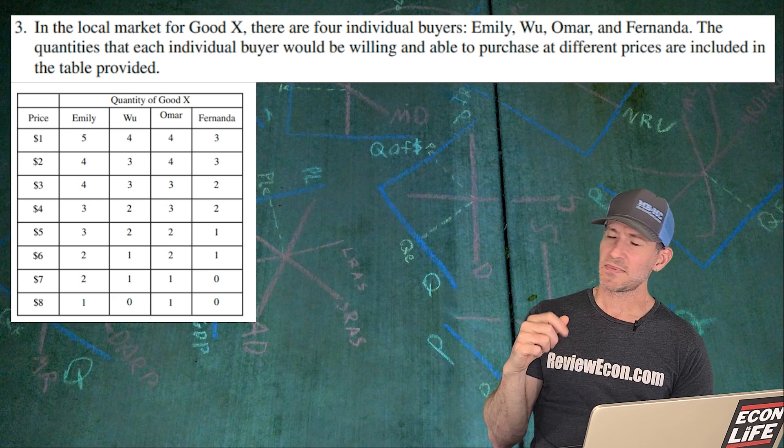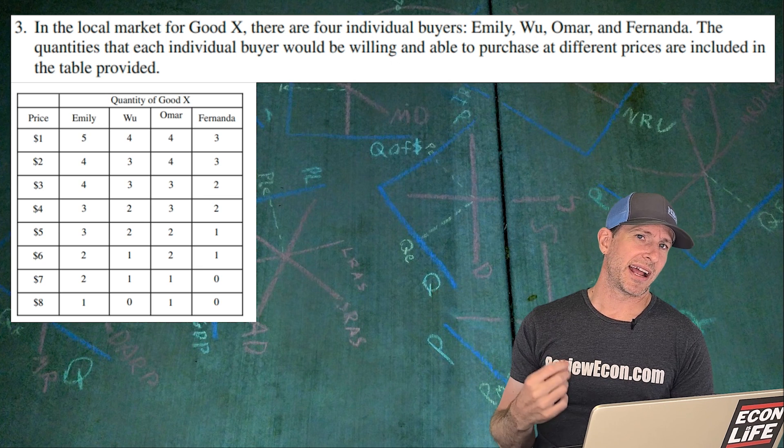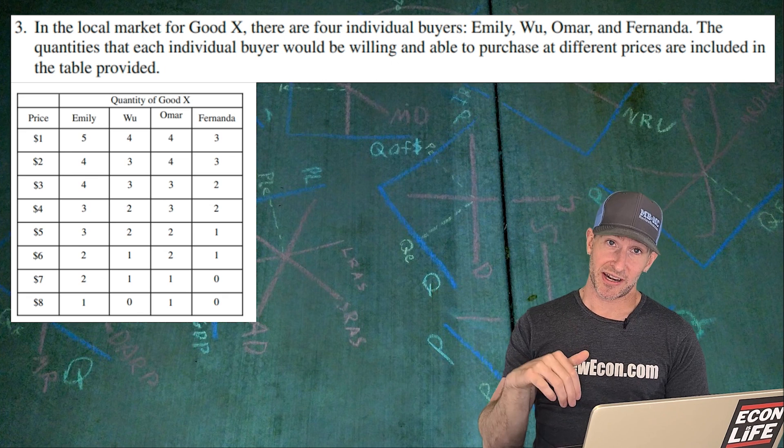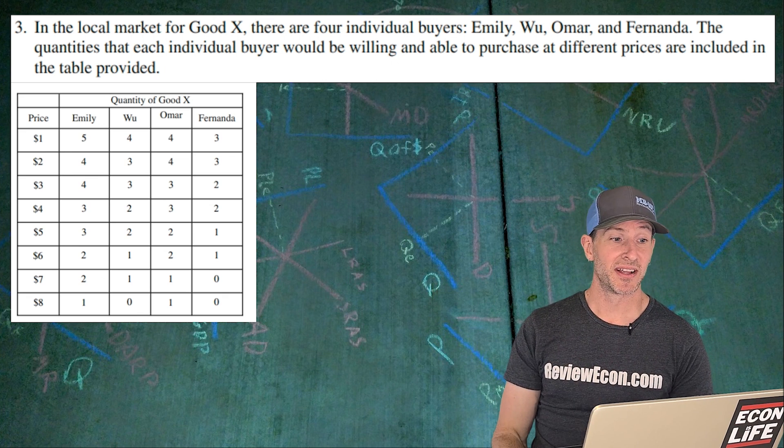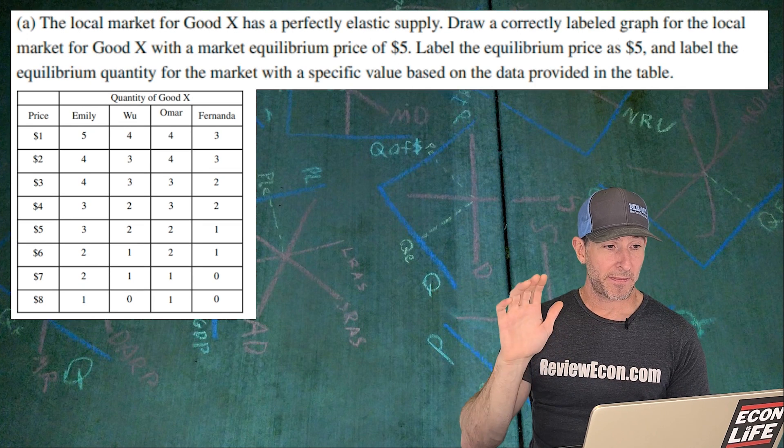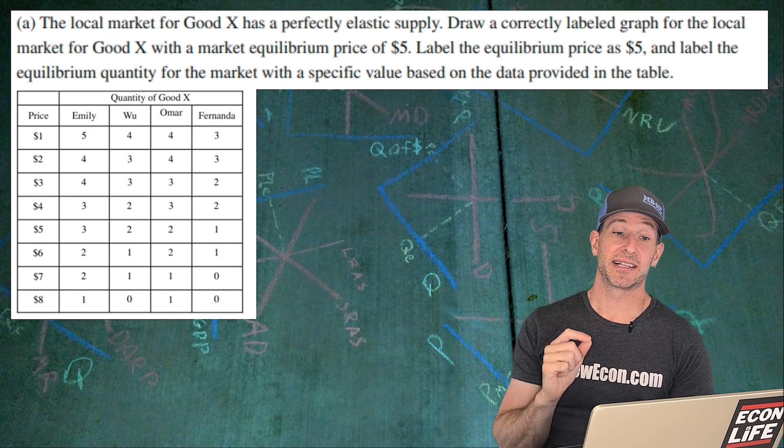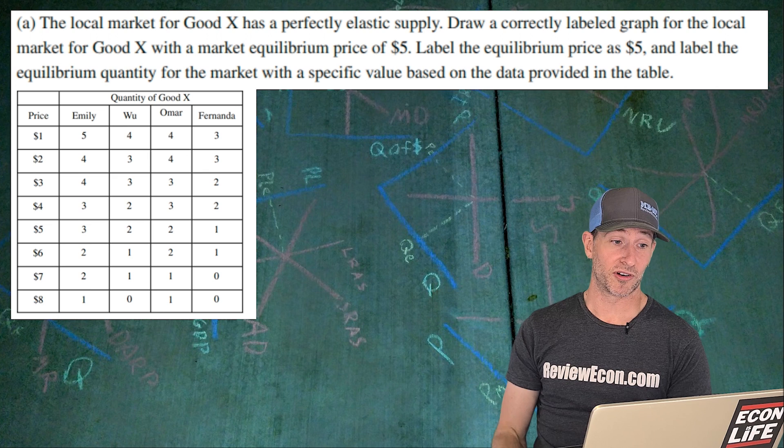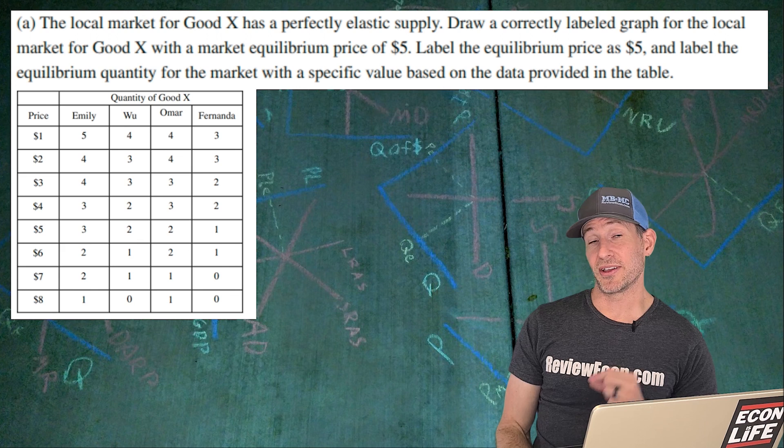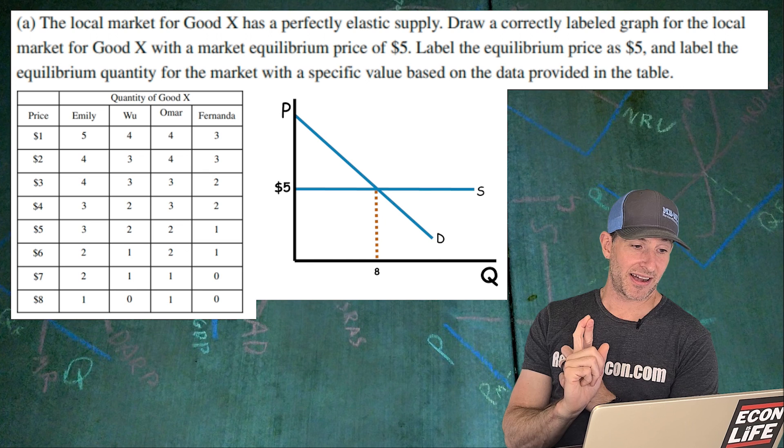Moving on to the next one. The last question for set one. This is a tricky one. There's all kinds of numbers here. This is actually testing whether or not you understand that a market demand curve comes from individual people's demand curves within a market. So we have a whole bunch of individual people's demand curves and we're going to add them all up to get the market demand curve. First question we have to answer is, we're first going to assume that the market has a perfectly elastic supply curve. We're going to draw the market for the local market for good X with an equilibrium price of $5. We're going to label that equilibrium price and label the equilibrium market quantity.